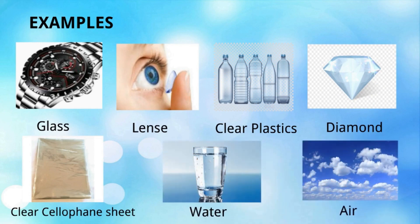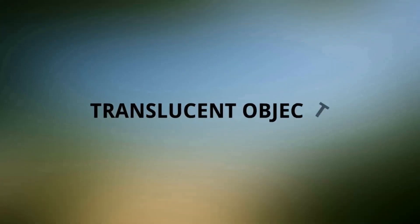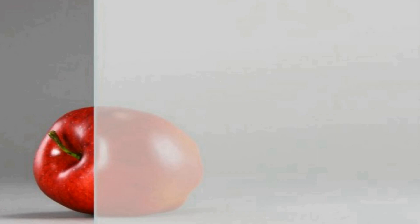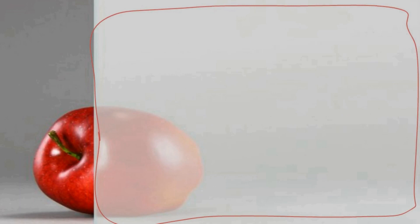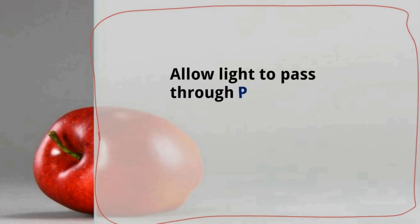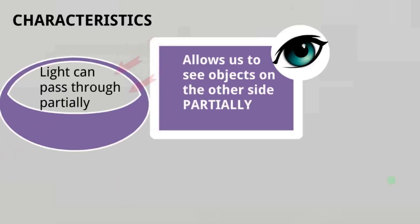For translucent objects: consider an apple behind a translucent material — some portions of the apple we can see clearly and some we cannot. Light passes through partially, so we cannot see the apple clearly. Characteristics: light can pass through partially, allows us to see objects on the other side partially, and only a faint shadow is formed because light is only partially obstructed.